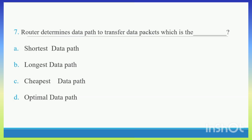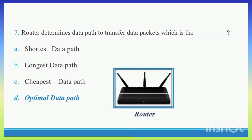Question 7. Router determines data path to transfer data packets. Option A: Shortest data path. Option B: Longest data path. Option C: Cheapest data path. Option D: Optimal data path. Router determines the data path to transfer data packets — the optimal data path. Right Answer D: Optimal data path.